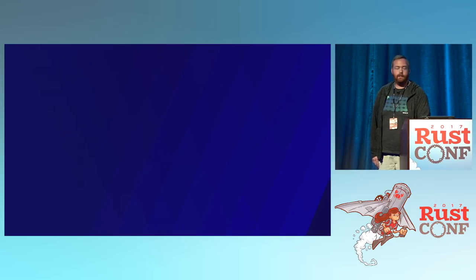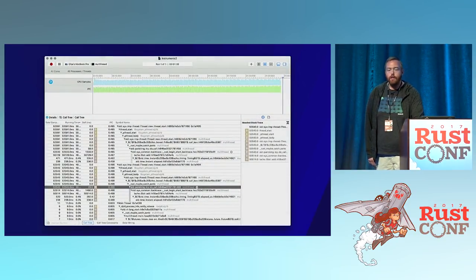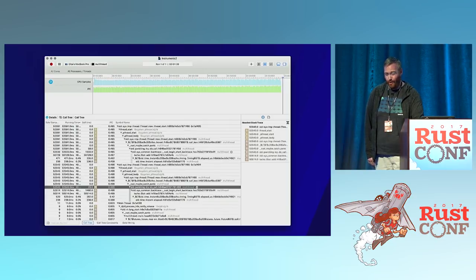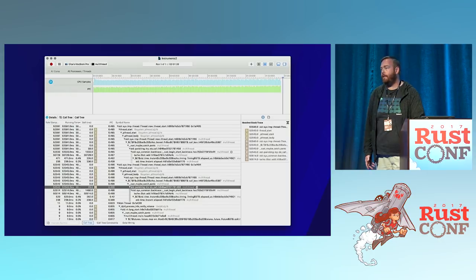Going back to the earlier slide — here I've chosen to look at the IPC for the multi-threaded benchmark using Instruments. You can see we have an IPC score of less than 0.5. You might think that's 50% utilized and great, but it's a three- or four-wide CPU, so that's like 50% of four — it's really poor, maybe only 10% utilized.